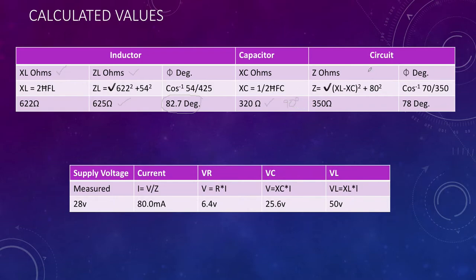Finally, to work out the entire Z for the circuit, we take the XL and subtract it from the XC and square that, and take the internal or the resistance of our lamp and square that, add them together, and take the square root. We end up with a circuit impedance of something in the order of about 350 ohms at an angle of about 78 degrees.